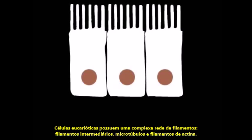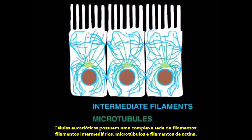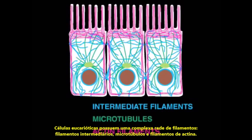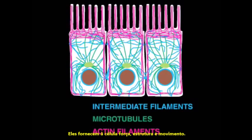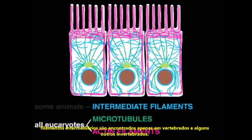Eukaryotic cells contain a complex network of filaments — intermediate filaments, microtubules, and actin filaments — that provide the cells with strength, structure, and movement. Although all eukaryotic cells contain microtubules and actin filaments, intermediate filaments are found only in vertebrates and a number of other soft-bodied animals.